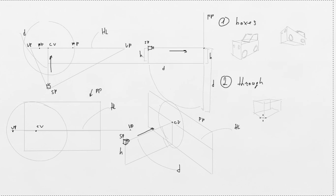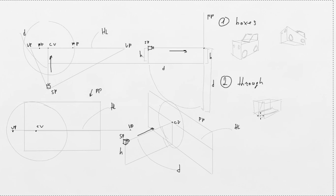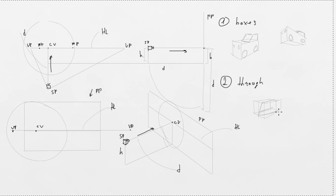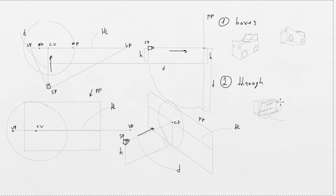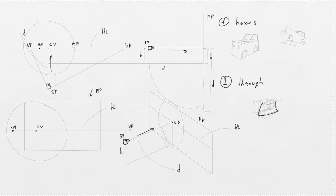Even though after finishing a drawing we will not see these hidden lines, it's important to draw them because it helps you understand the form better. So even if you draw something that will not be seen in the final rendering, it's very important to draw it through — because it helps you construct the form correctly.